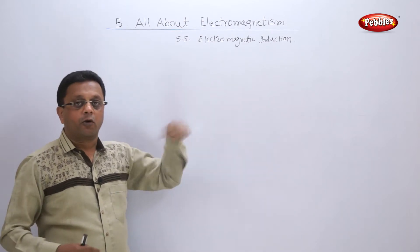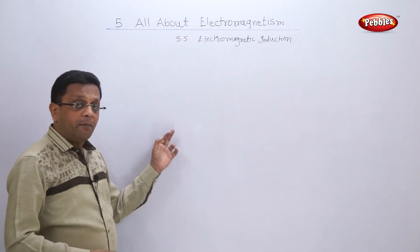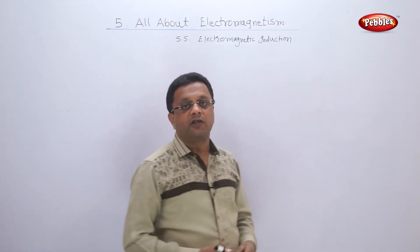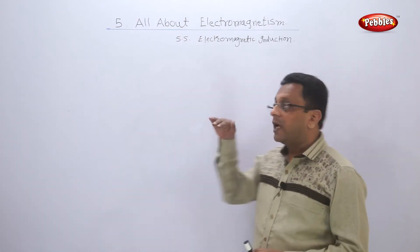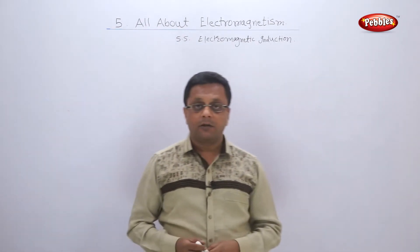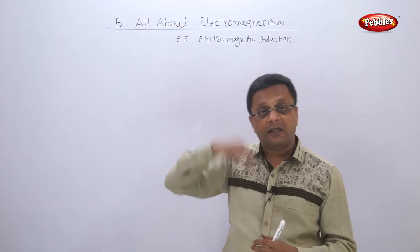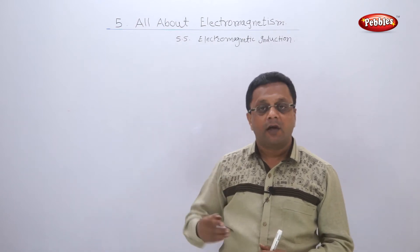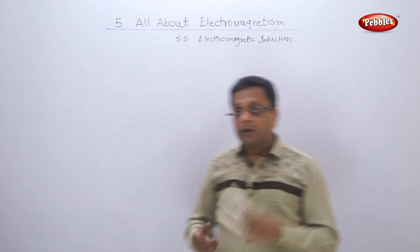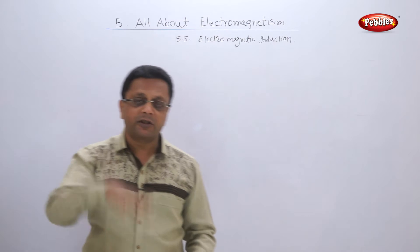Now suppose if I am providing the magnetic field and the rotation by some means, then the third thing — electricity — will be generated. This is how hydroelectric power stations work: with the help of high-speed flowing water, the turbines are moved, giving rotation, and with that high-speed rotation, heavy electricity is generated.